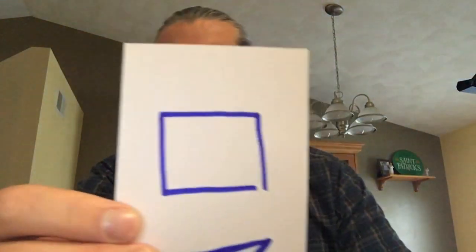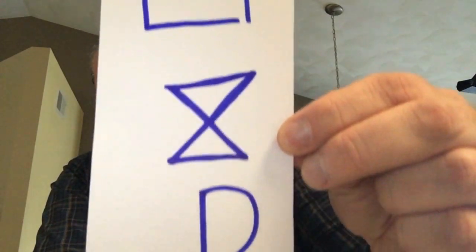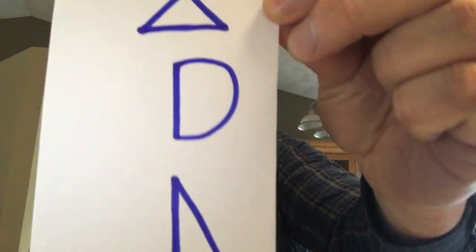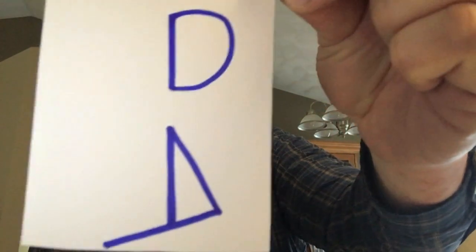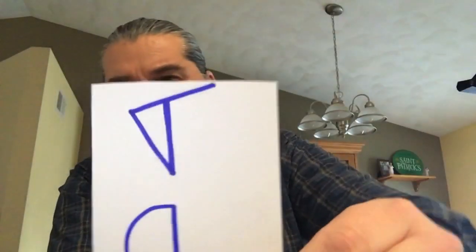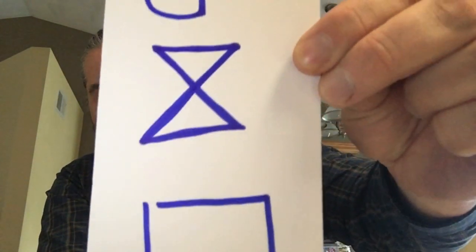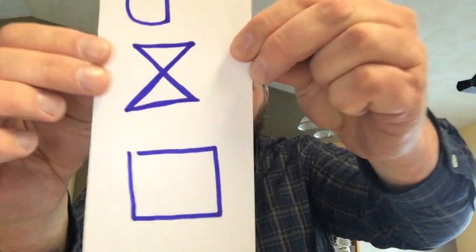These are definitely polygons. Now, these are not polygons. Check these out. Nope. Nice try. Nope. Ooh. Nah. Nice try. No polygon. Nope. Definitely not polygons. So here are the not polygons.